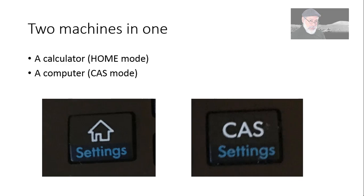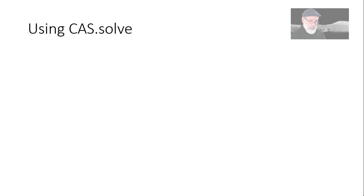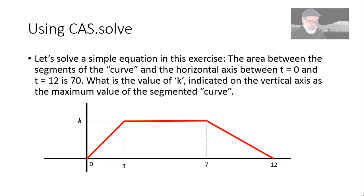Today we concentrate on the CAS mode of operation. Let's use the CAS solve function, which is powerful and very handy in engineering. We're given that figure, the red one, and we are told that the area under that curve between t equals 0 and t equals 12 is known to be 70.